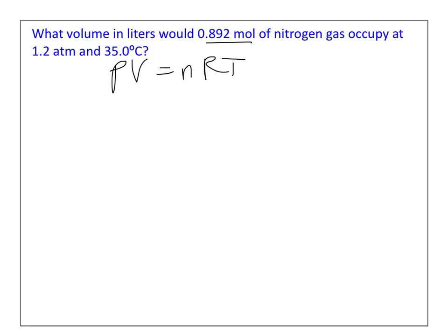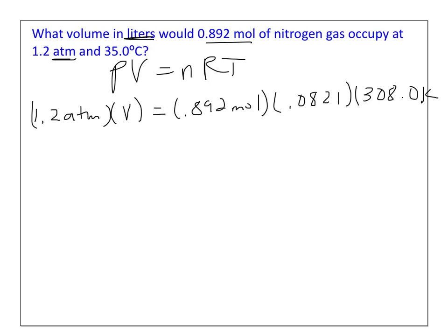So for pressure, 1.2 atmospheres. It's good to be able to recognize your pressure units. There are so many of them. And we're going to solve for volume. N is for moles, 0.892. R is a constant value that we're going to look up based on our pressure and volume units of atmospheres and liters. And that value is 0.0821. And then our temperature needs to still be in Kelvin. So all of these gas law calculations, if they have temperature, temperature has to be in Kelvin. Add 273. So that's 308 Kelvin. And then if you solve for volume, rounded to two sig figs based on the 1.2 atmospheres, you get 19 liters.